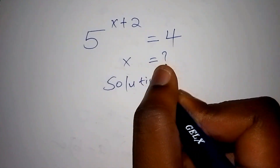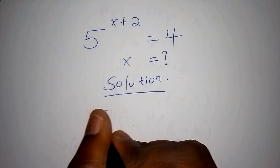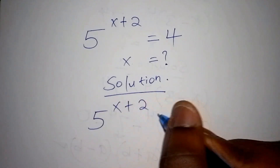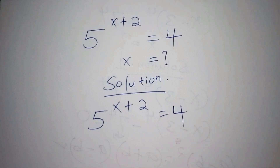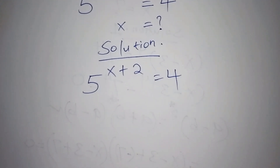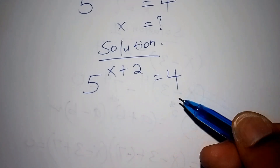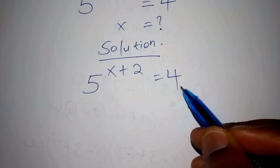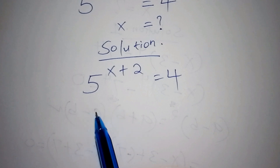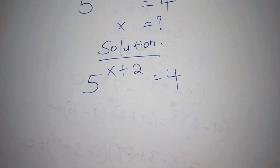Make sure you watch the video up to the end. We have 5 to the power of x plus 2 is equals to 4. These two numbers have base 5 and the whole number 4, and it is difficult to convert 4 to the base of 5, so we shall bring in the log to help us solve the entire problem.